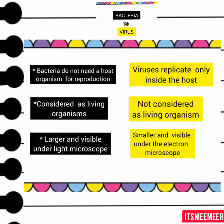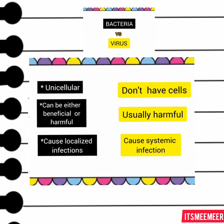Bacteria are larger and visible under a light microscope, while viruses are smaller and visible only under an electron microscope. A bacteria is unicellular, while a virus does not have cells. A bacteria can be either beneficial or harmful, while a virus is usually harmful.